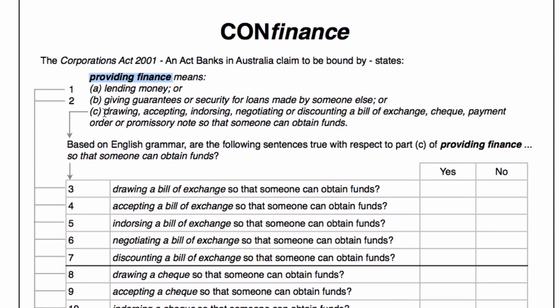What I specifically want to look at is the third sentence here, which looks like a complicated sentence. But if we break it down, we've got five ways: drawing, accepting, endorsing, negotiating or discounting. And then the document types: a bill of exchange, check, payment order or promissory note, so that someone can obtain funds.